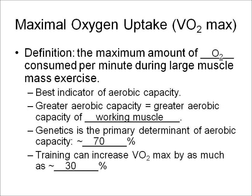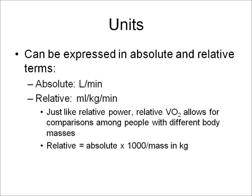Some people can improve their VO2 max up to 40%, maybe more. But in general, humans can improve their VO2 max by about 30%, and about 70% is genetic. Units can be expressed in absolute and relative terms. Absolute is in liters per minute; relative is in milliliters per kilogram per minute. Just like relative power, relative VO2 allows for comparisons among people with different body masses. The equation for relative VO2 is absolute times 1000 — which converts liters into milliliters — divided by the mass of the person in kilograms, giving you mL per kg per minute.